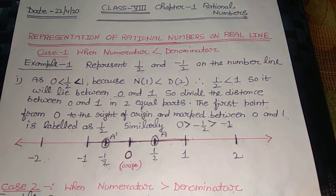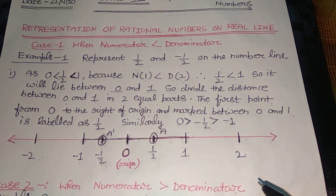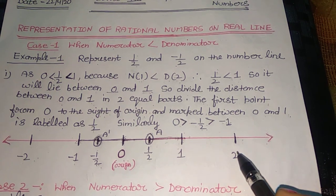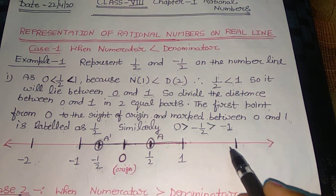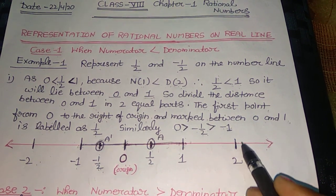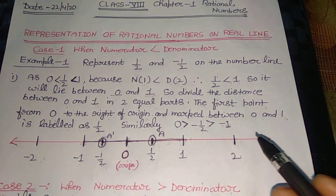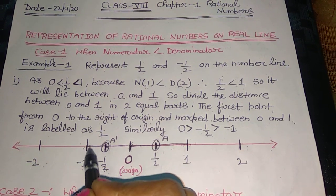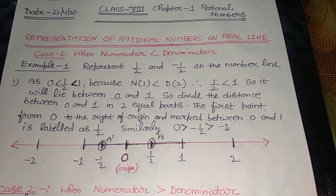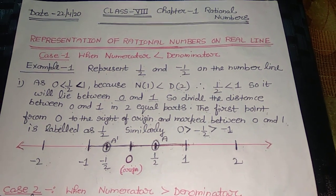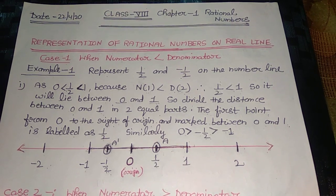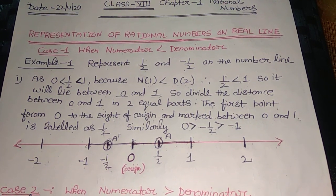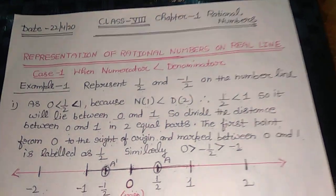Now, if you have to represent the integer 2, it will be represented here. If you have to represent the integer minus 1, it will be represented here. But today we will learn how to represent rational numbers on the number line. There are two cases.